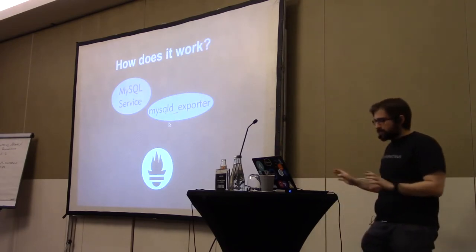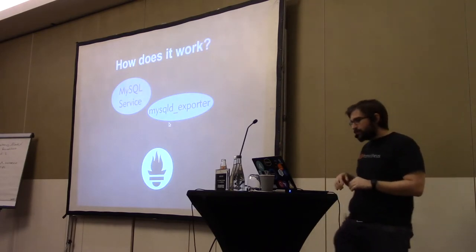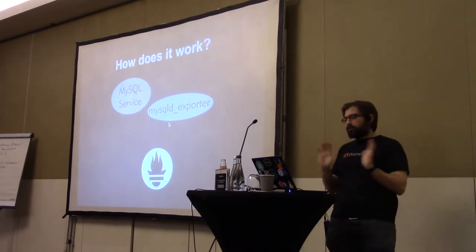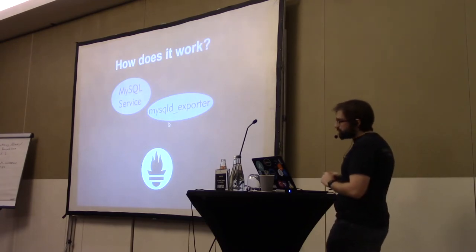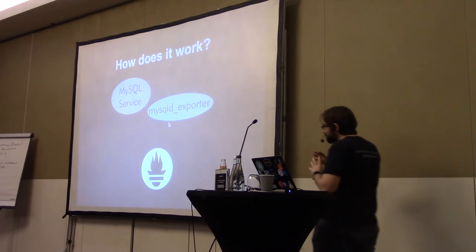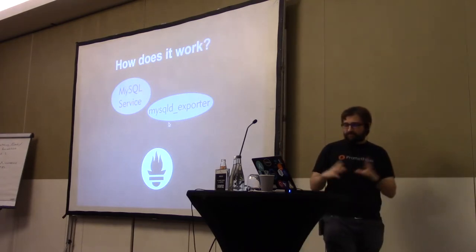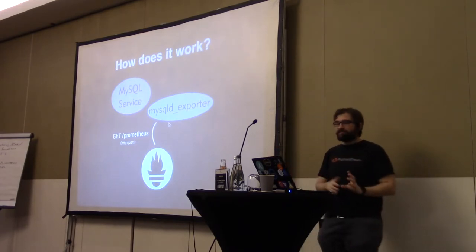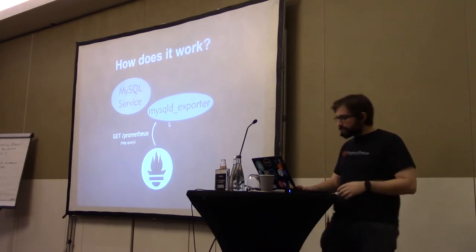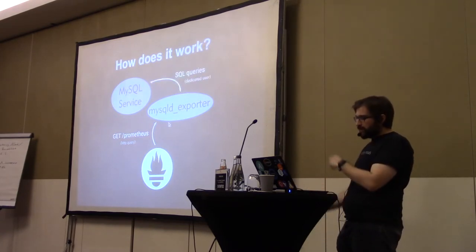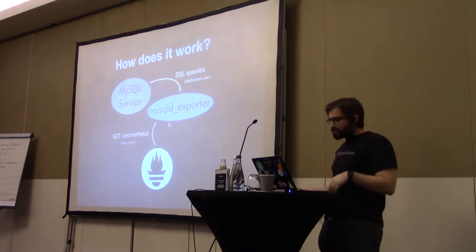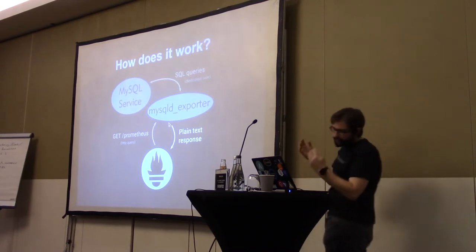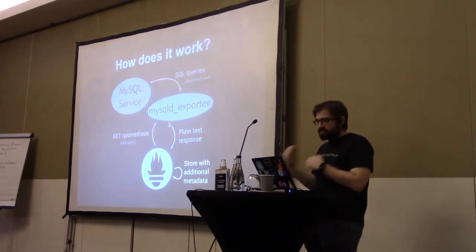So how is Prometheus working? Let's say you have a MySQL service. MySQL does not expose Prometheus metrics, which is just a text HTML page. So you add next to MySQL something called an exporter — in this case, the MySQL exporter. Prometheus will go to the MySQL exporter and say 'give me your metrics using the HTTP protocol.' The MySQL exporter will run the SQL queries to MySQL to get the data, then give the metrics back to Prometheus, which stores them with additional metadata into its database.